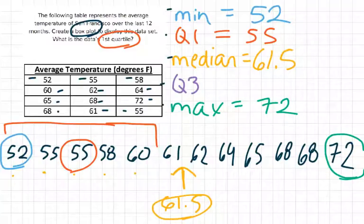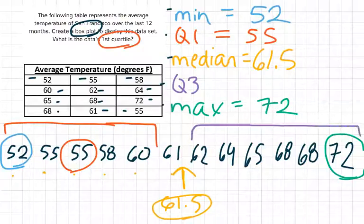For quartile three, we're going to do the same thing, but this is the third quartile. So it's the upper half of the data we're going to take, and we're going to split that right in half. Oops, I need to go back here. I made a mistake.